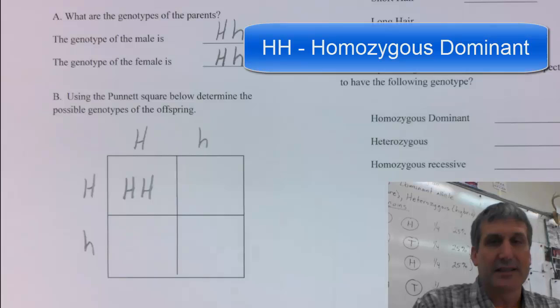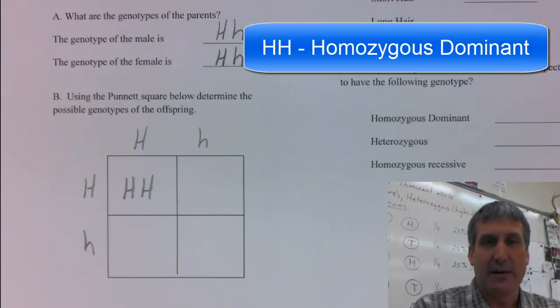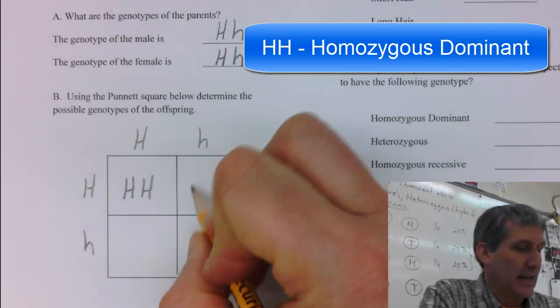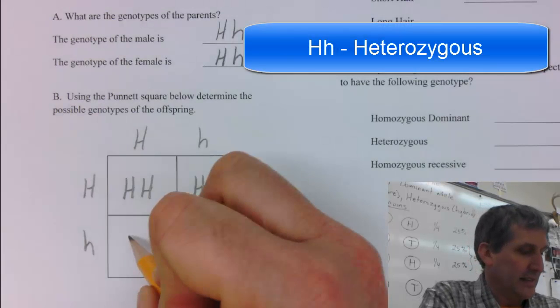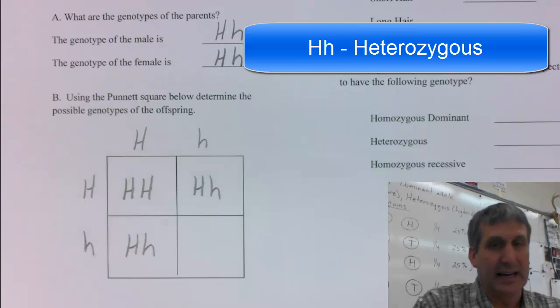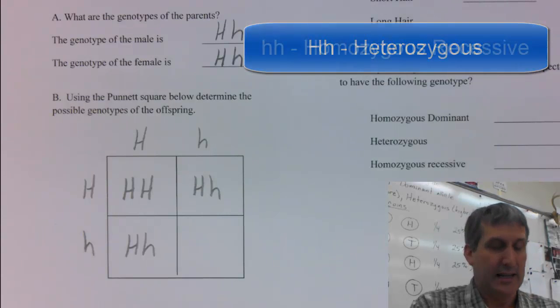So in the first case, you get homozygous dominant, big H, big H. In this case, you get heterozygous, big H, little h. In this next case, another heterozygous, big H, little h.